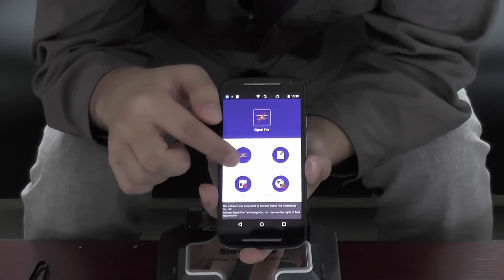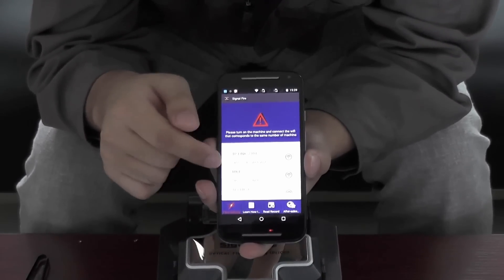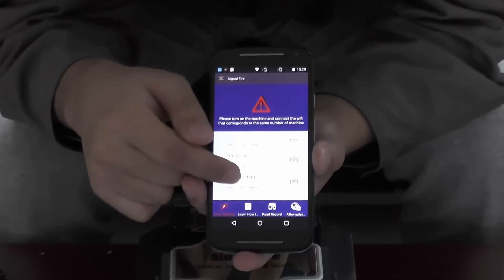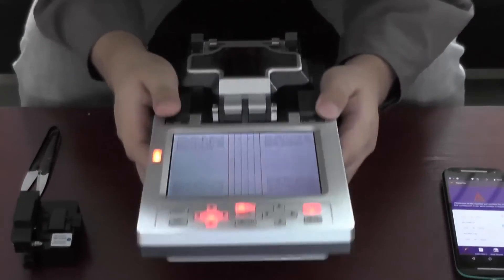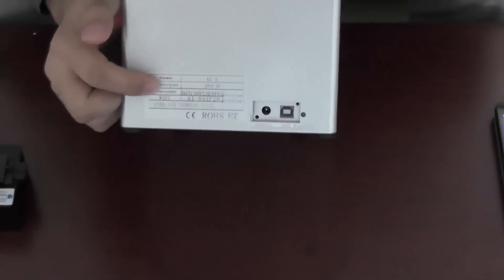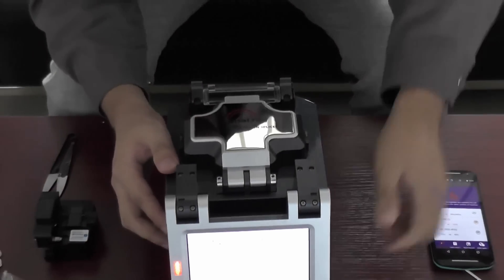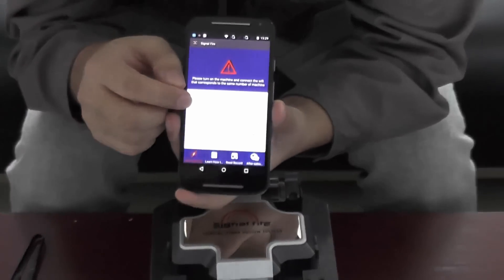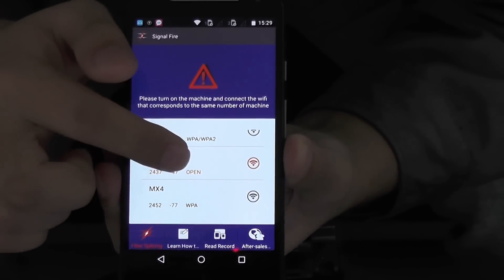Now we choose the fiber splicing. You see, now here there is the list, the list of the Wi-Fi. Every machine has a Wi-Fi number on the bottom. Here, you see here, 45026. Now we should choose the same number to connect the machine. From the list, you see, 4, 5, 2, 6. Now click it.